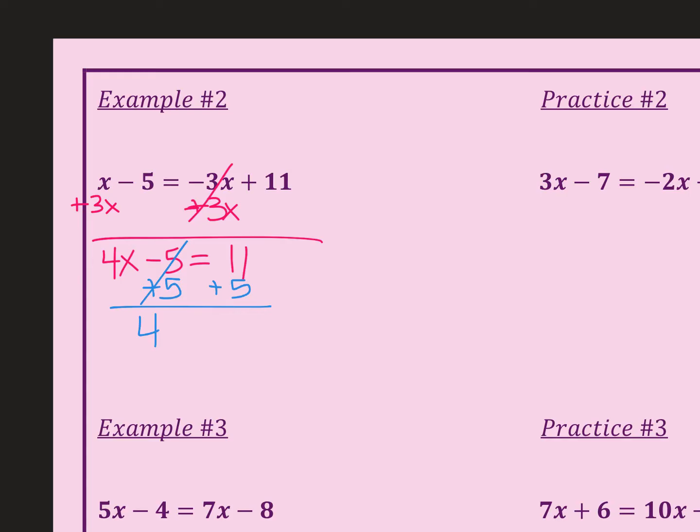Then I end up with 4x = 16. Now that 4 is being multiplied. So in order to make this a 1x, I need to divide by 4. 16 divided by 4 equals 4.